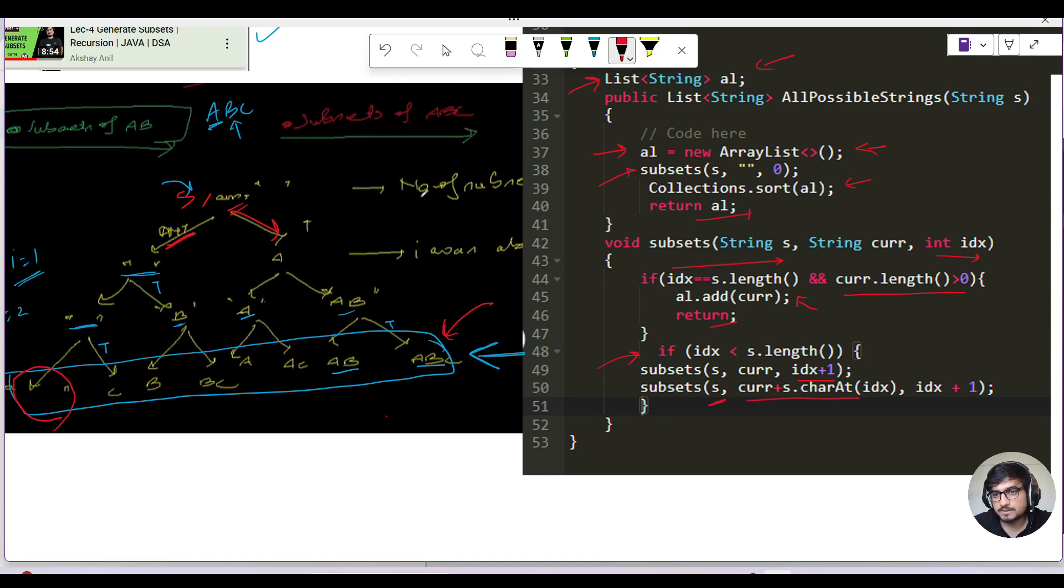If you see the take branch, you pass current plus s.charAt(idx). This idx is the level of branching. For the first level it's 0, then it goes to 1, then to 2, and at the last level it will be 3, which hits our base case. When we're going to the take branch, we're including the character by adding it to our current string.